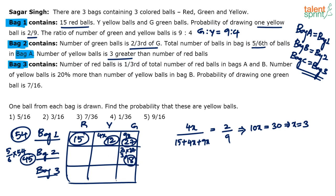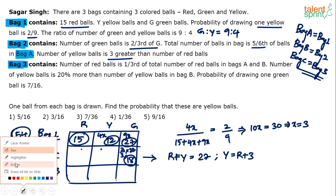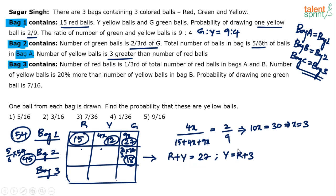From red + yellow = 27 and yellow = red + 3: substituting gives red + (red + 3) = 27, so 2·red = 24, red = 12, yellow = 15. Bag two has 12 red, 15 yellow, and 18 green balls, totaling 45. Check: 12 + 15 = 27 and 15 is 3 more than 12. ✓